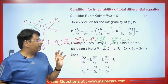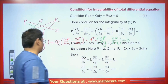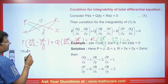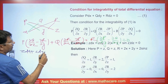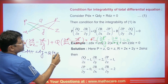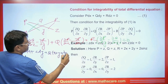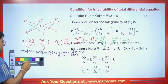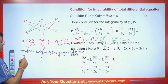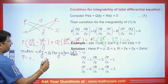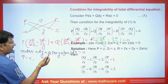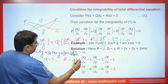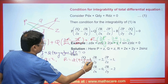Let me explain how we solve this question. The equation given is z dx plus z dy plus (2x plus y plus sin z) dz equals 0. So the value of P is z, the value of Q is also z, and the value of R is (2x plus y plus sin z).